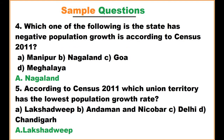Which one of the following states has negative population growth according to the 2011 census? The options are Manipur, Nagaland, Goa, and Meghalaya. The answer is Nagaland. Make note: Nagaland has negative population growth according to the 2011 census.